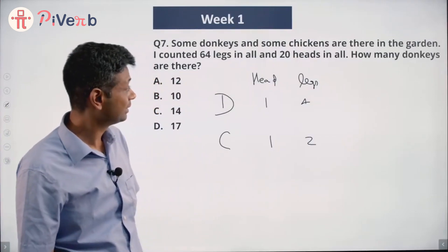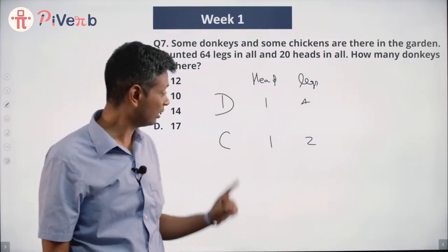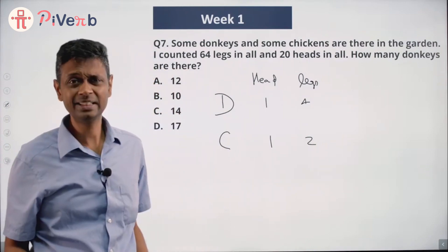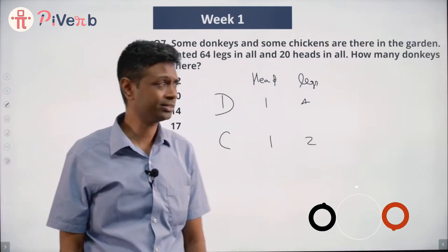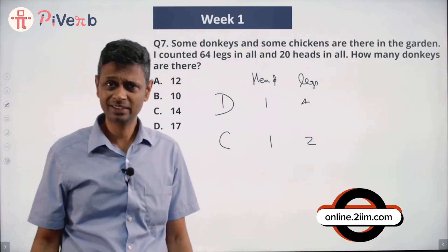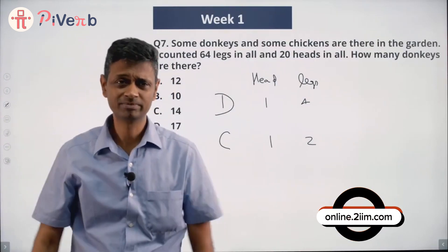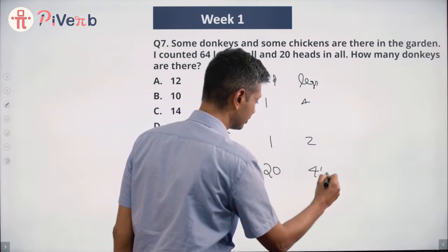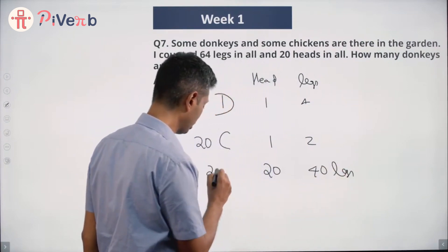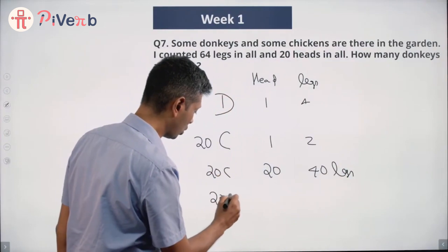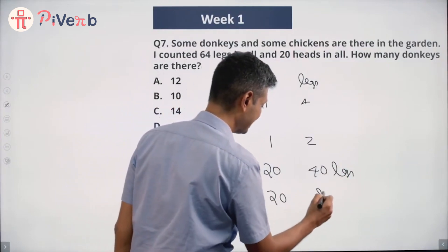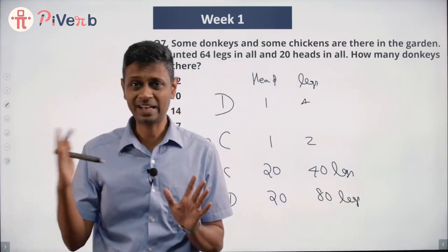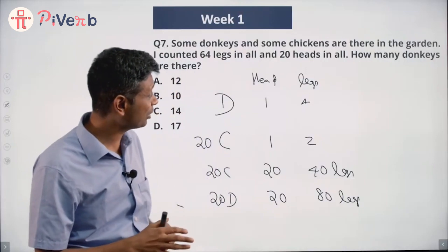In all of these questions I really like thinking about extreme scenarios. Forget donkeys and chickens — assume it's only chickens. So 20 chickens will have 20 heads and 40 legs. If all 20 were donkeys, that's 20 heads and 80 legs. Either extreme is simple, but our answer for number of legs is 64.